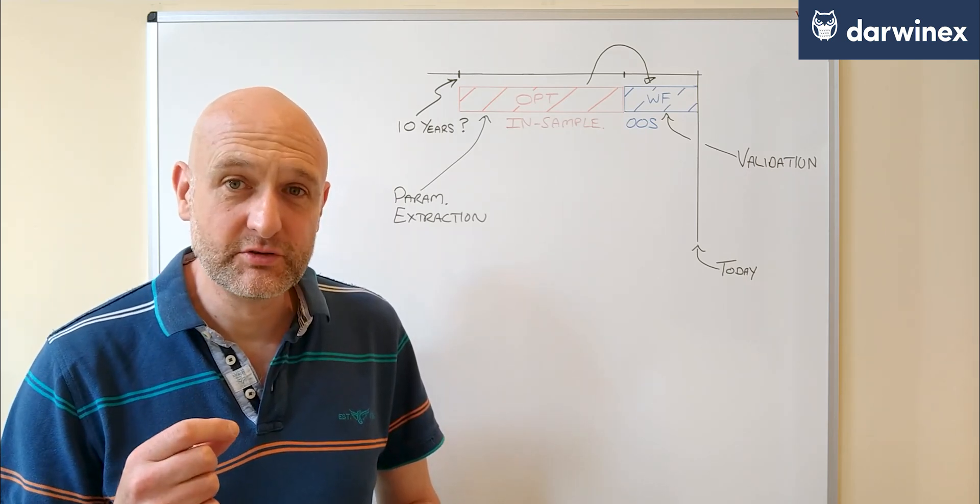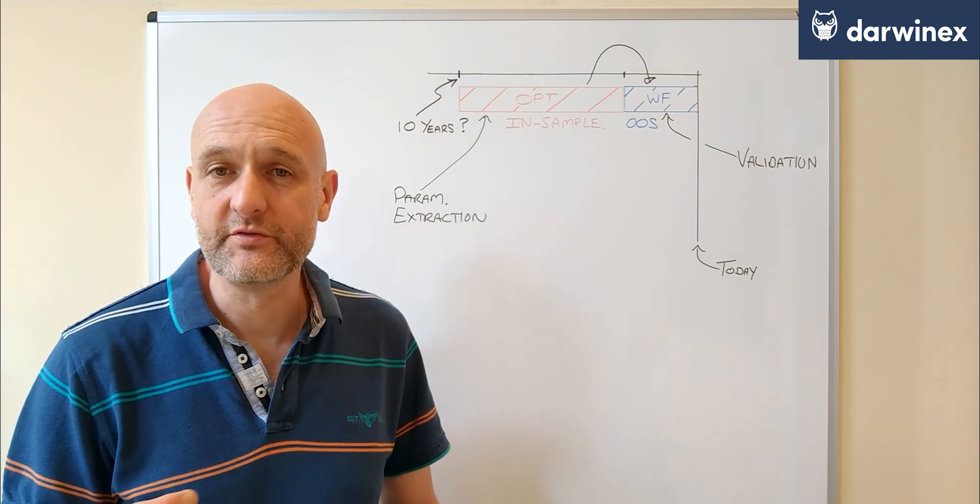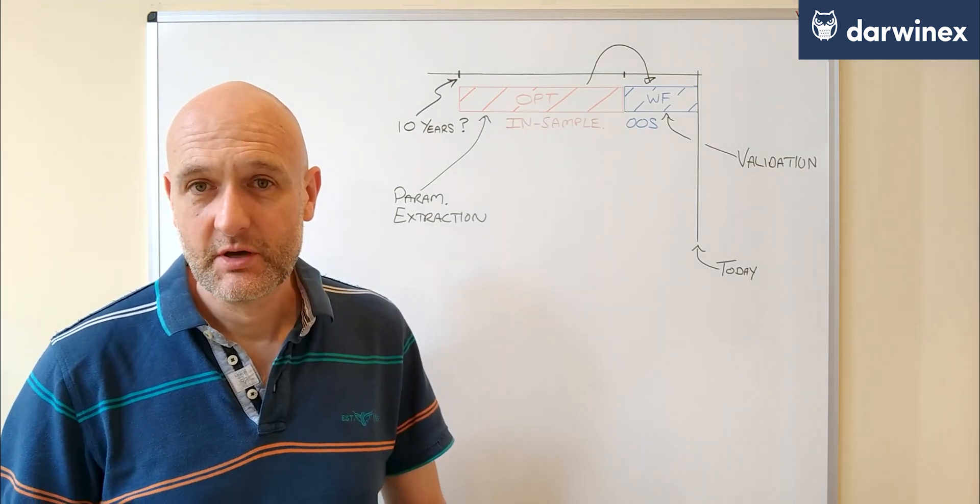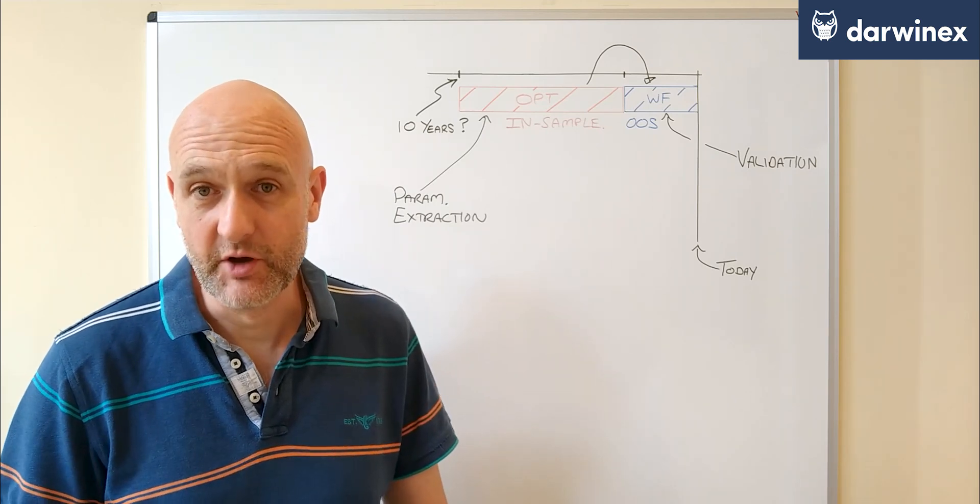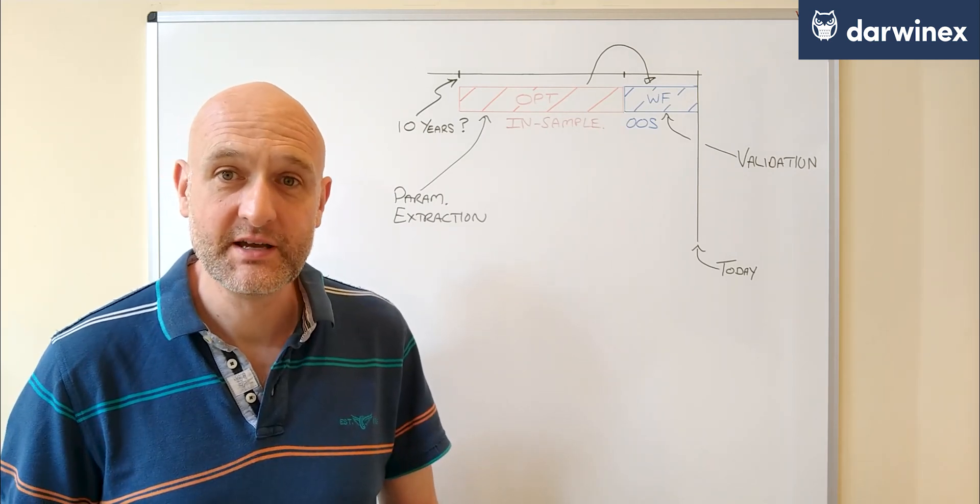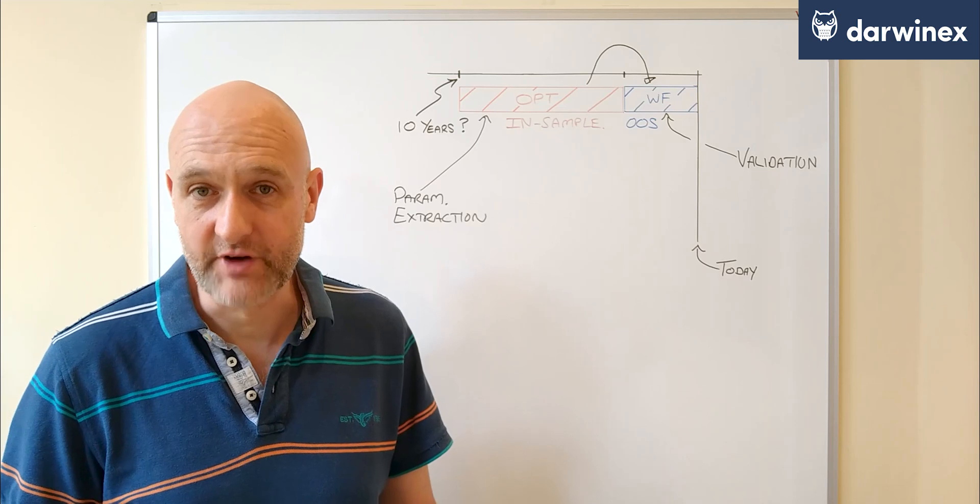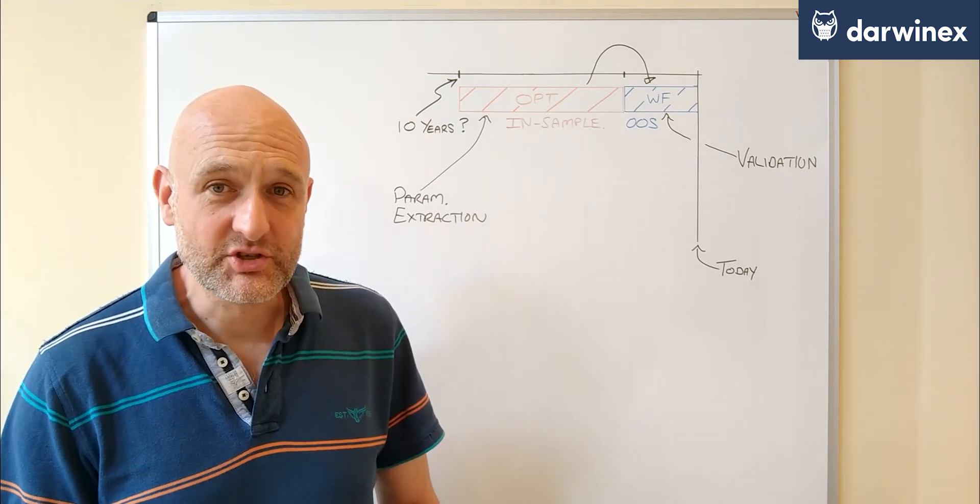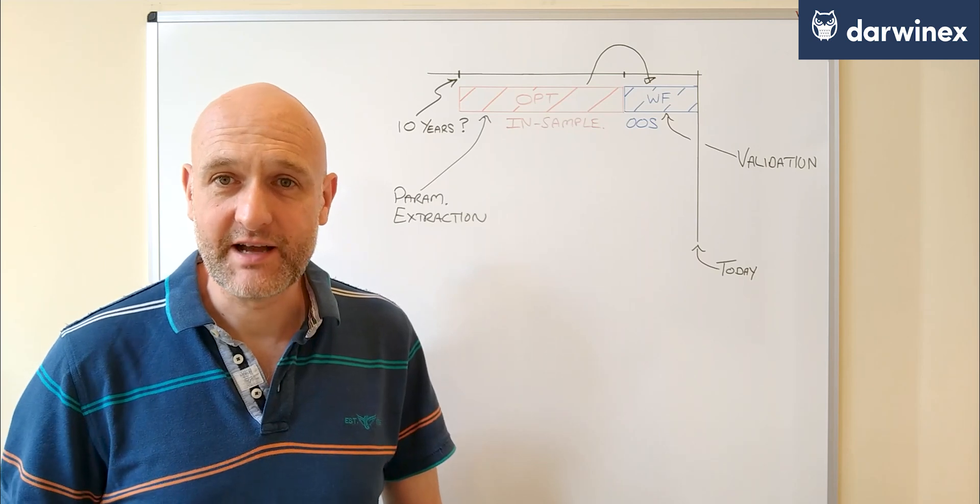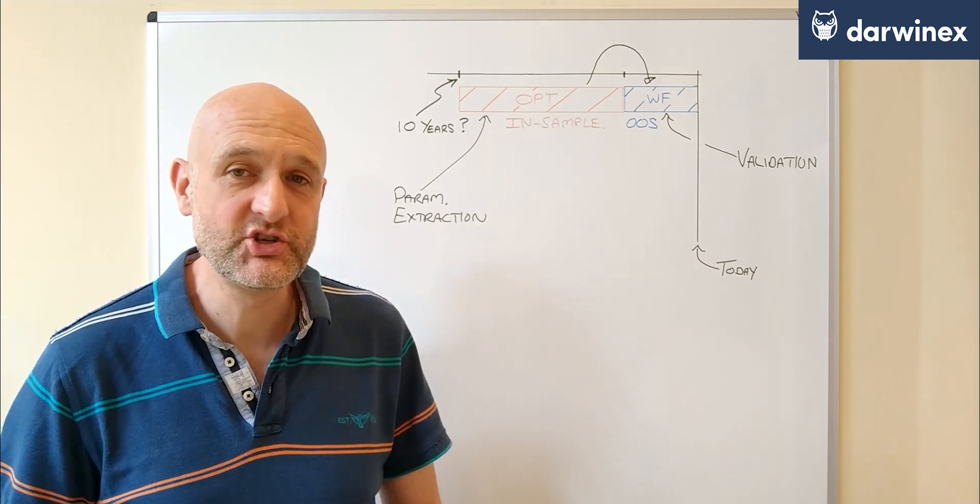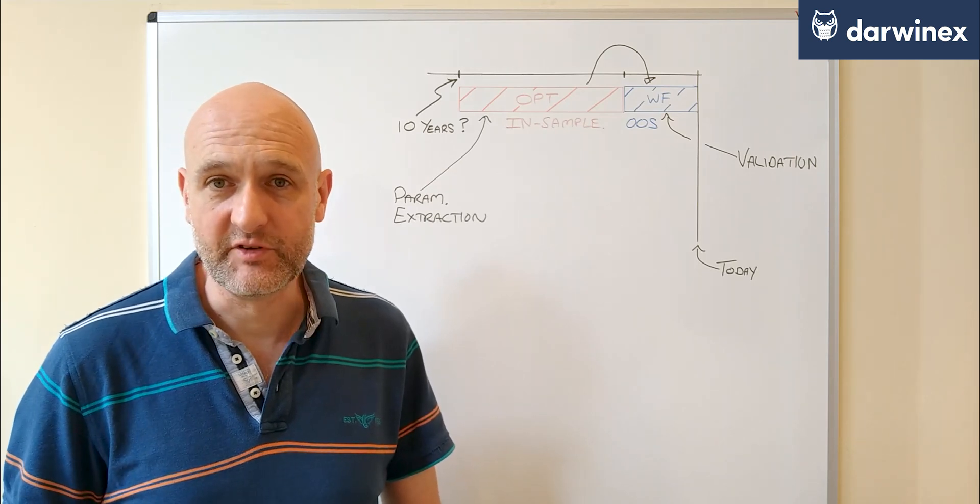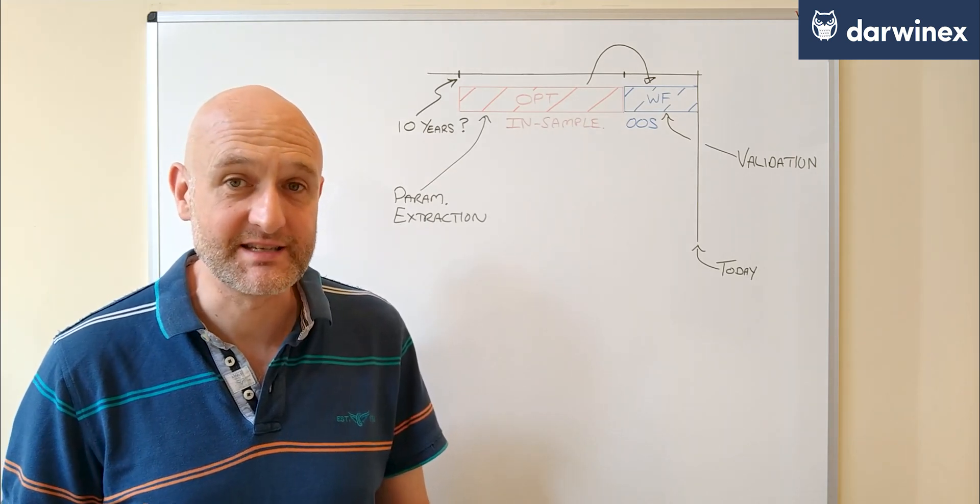Now if the walk-forward results lose money, then that means one of two things. Either your system doesn't have an adequate edge, which means that the test has served its purpose and it's informed you about that, in which case you obviously shouldn't trade it in your live account. Or secondly, it might just mean that you didn't optimize effectively and didn't pay due consideration to statistical significance and all of the best practice that we've been talking about in the last six episodes.